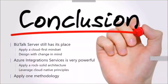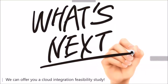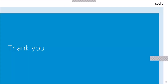To conclude the webinar: BizTalk Server still has its place, but make sure you apply a cloud-first mindset and design with change in mind — decouple your integrations. Azure Integration Services is extremely powerful, but you need to know what you're doing — apply a rock-solid architecture and leverage cloud-native principles: use Key Vault for security and Azure DevOps to roll out your integrations automatically. Very importantly, regardless of the technology, use one methodology and use proven integration patterns. As a next step, we can offer you a cloud integration feasibility study where we look at your integration needs or current integration landscape and do an estimation of what is possible for you in Azure Integration Services. Thanks a lot for your attention.